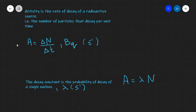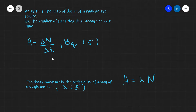Mathematically, we can write the equation for activity as ΔN divided by Δt, where ΔN is the change in the number of particles — that is, the number of radioactive nuclides that have actually decayed per unit time. Normally this is measured in seconds, and the unit is known as the Becquerel, which is seconds to the power of minus one.